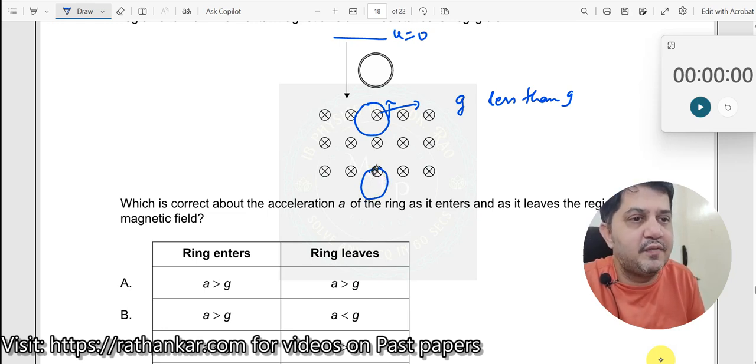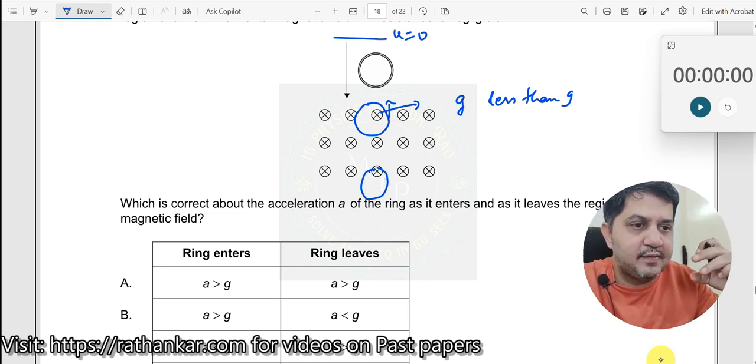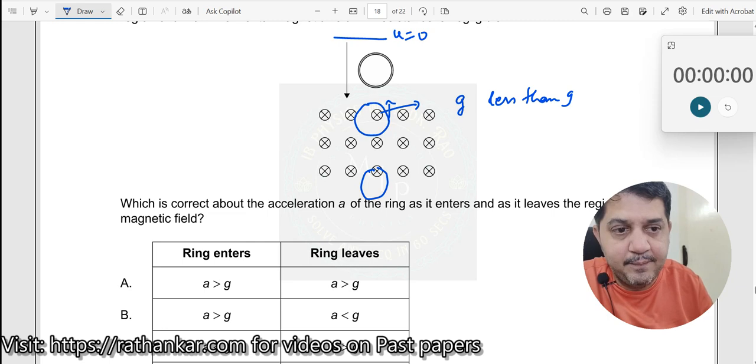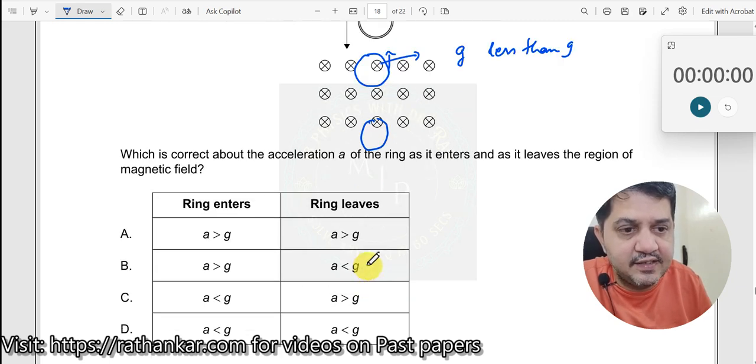Once again, the value of g will become lesser. This is a resistive force over here. Therefore, both the entry point and as well as the exit point, the value of acceleration would be lesser than g. The right answer here is less than g in both the sides. So it is option B.